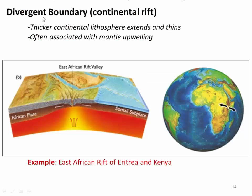The other type of divergent boundary is a continental rift. A good example of that is the East African rift, where the thick, old continental crust of Africa is literally being stretched and broken by extensional faulting. And eventually, if this process continues, this may develop into a mid-ocean ridge. But right now, it's happening within continental lithosphere, which means we call it a continental rift.